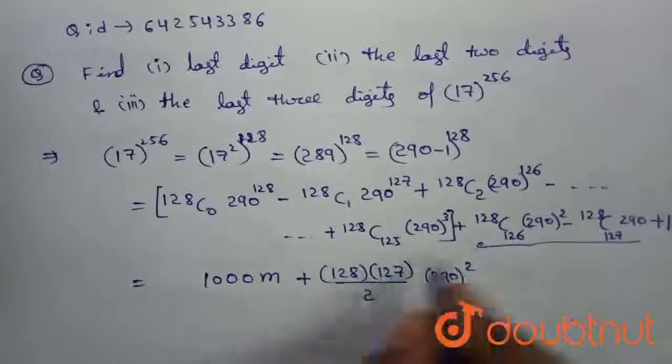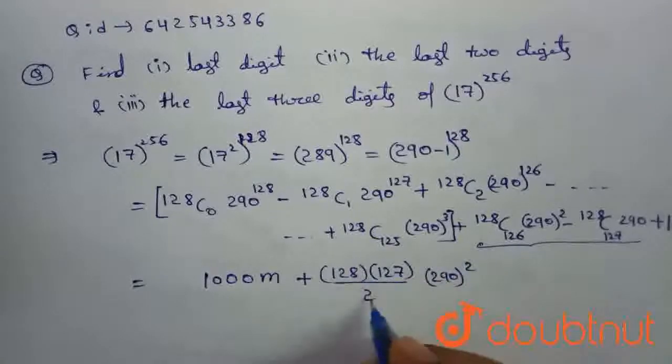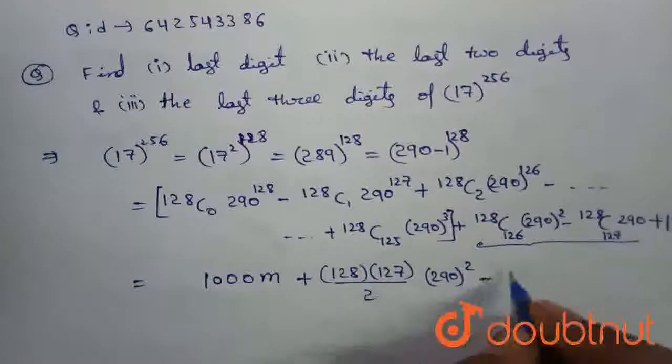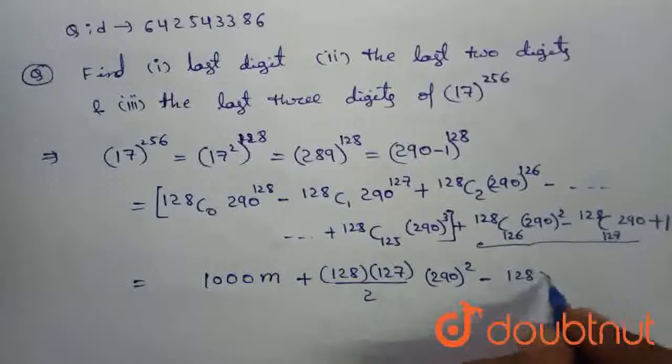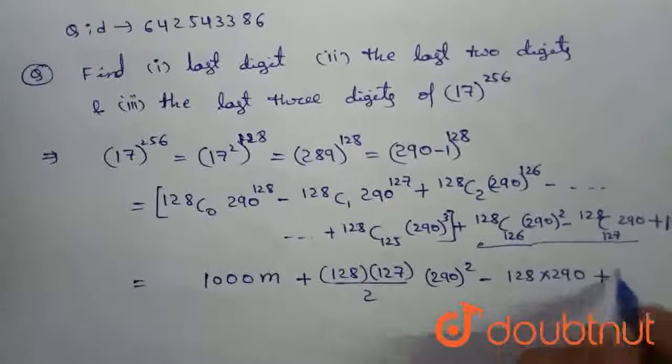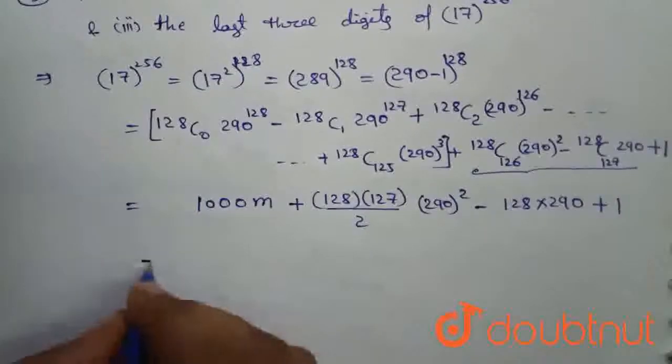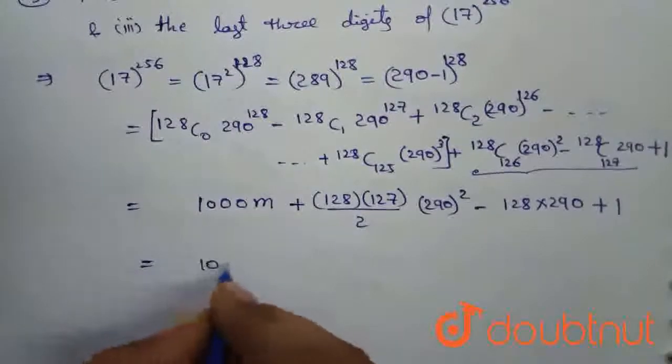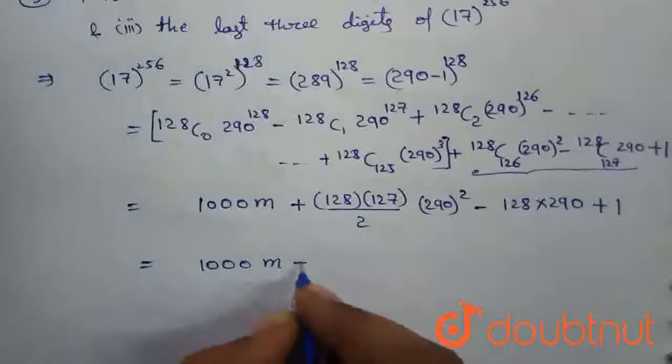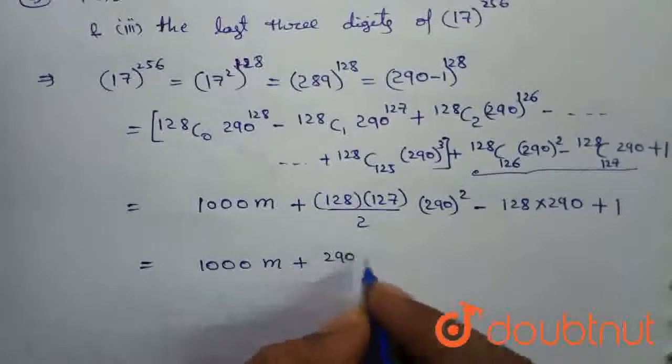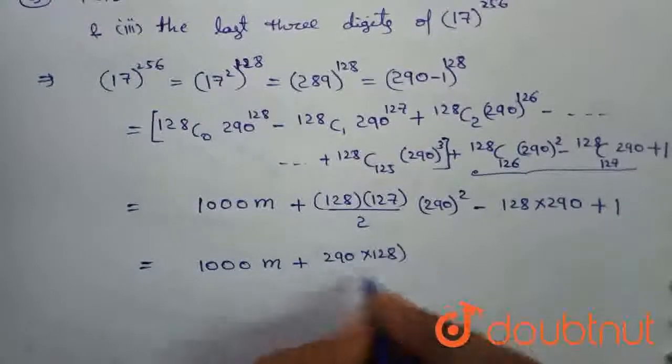Here we are using nC2 formula: N into N minus 1 divided by 2 factorial minus 128 into 290 plus 1.